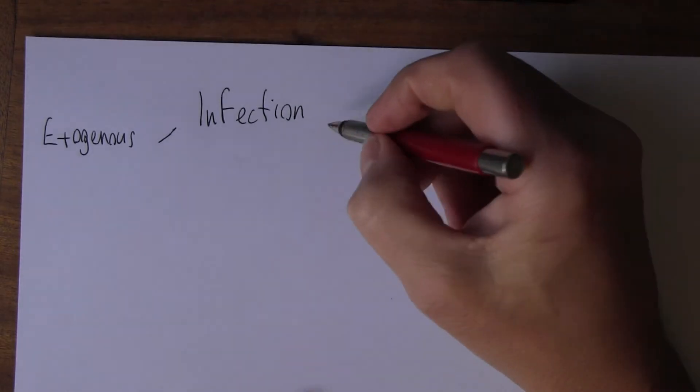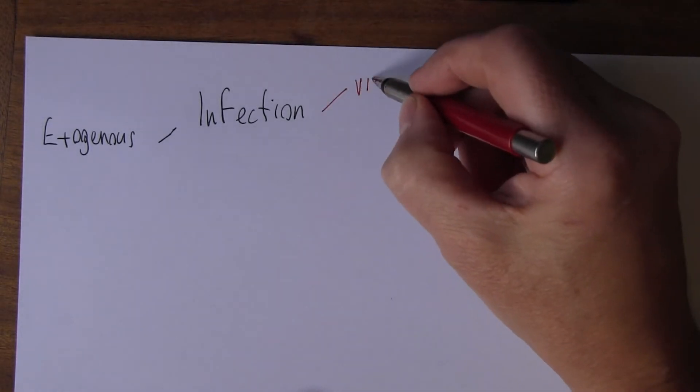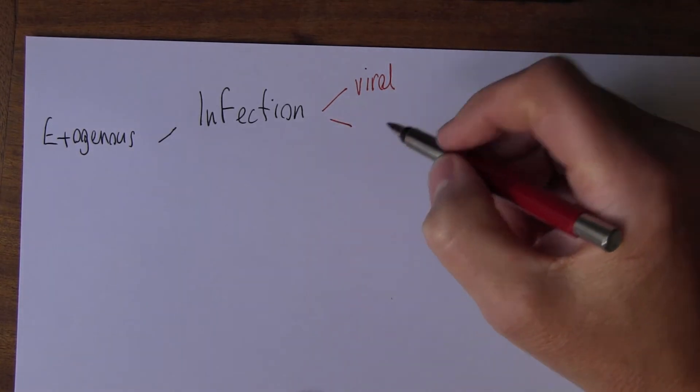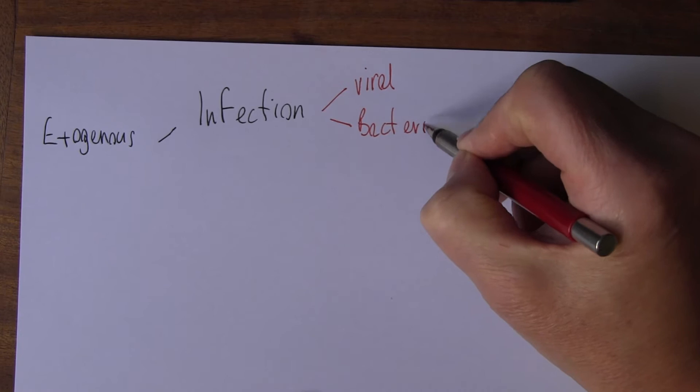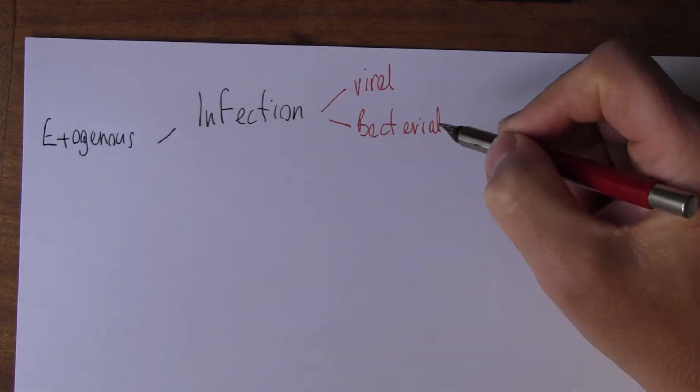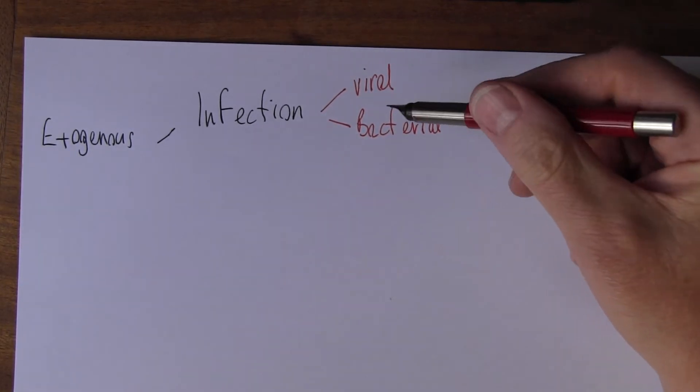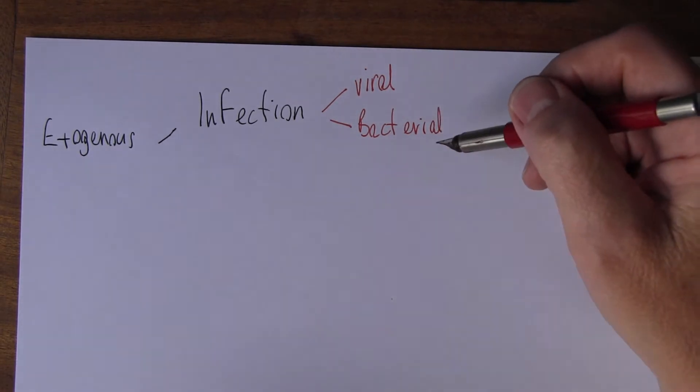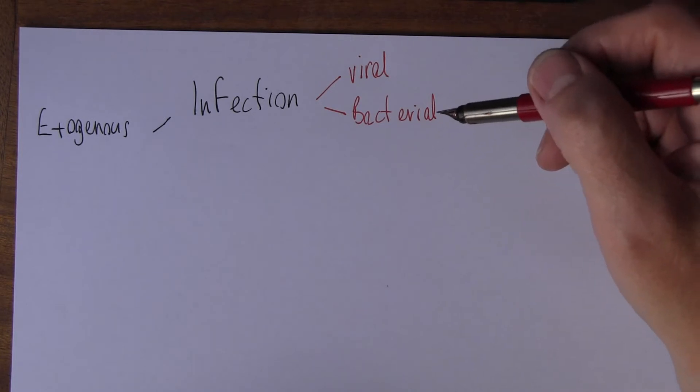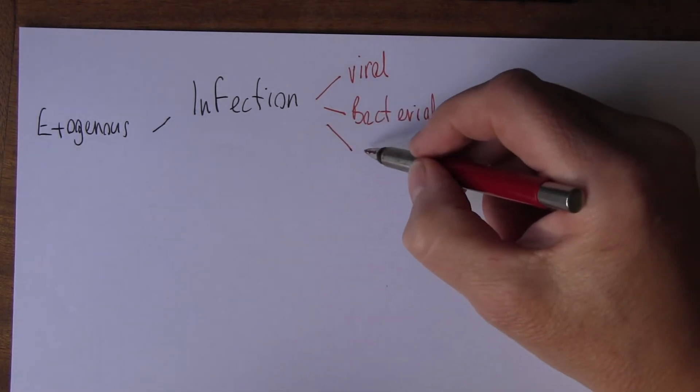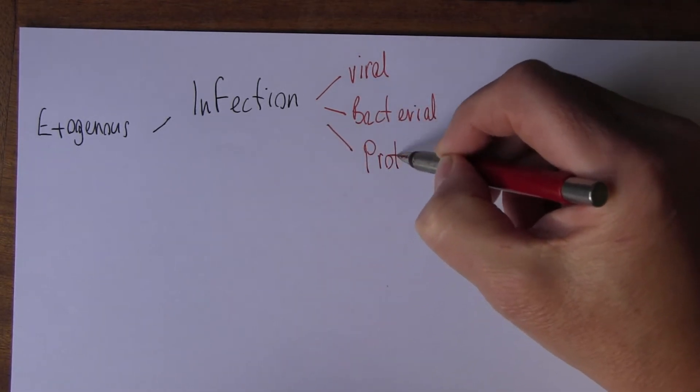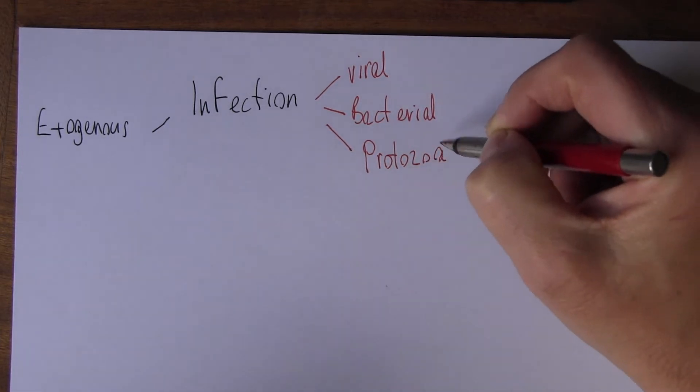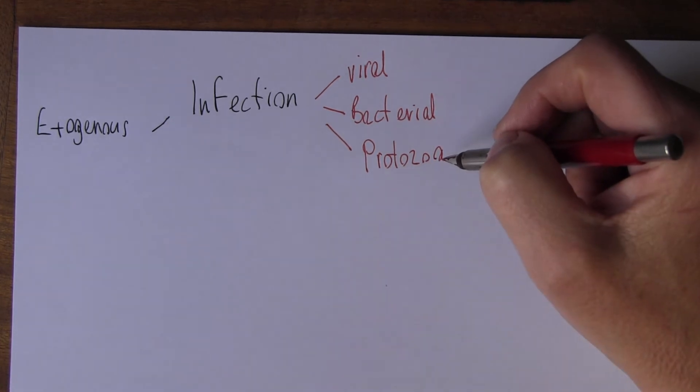So there can be viral infections. There can be bacterial infections. Important to know which is which, because viral infections don't respond to antibiotics, whereas bacterial infections often do respond to antibiotics. Or there can be bigger organisms called protozoa. These are the amoeba type organisms that can cause dysentery, for example.